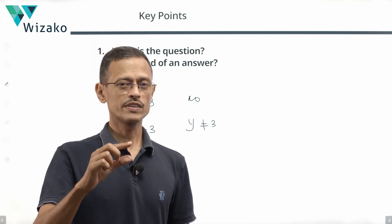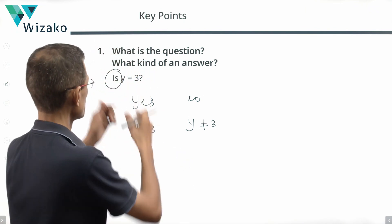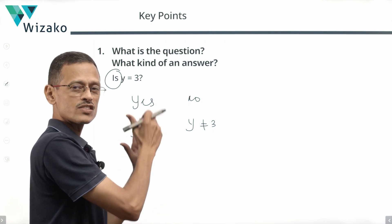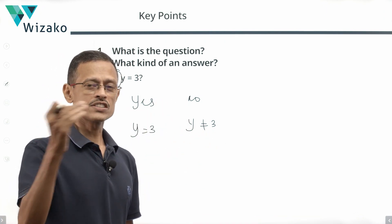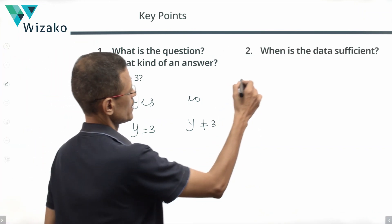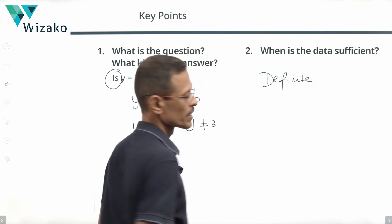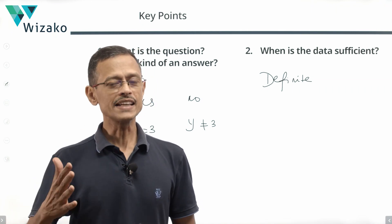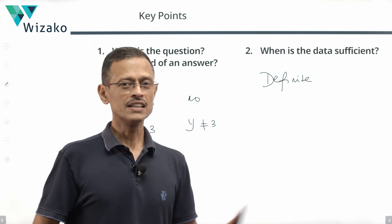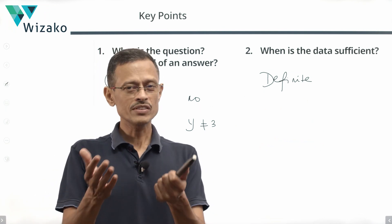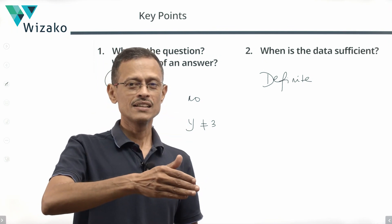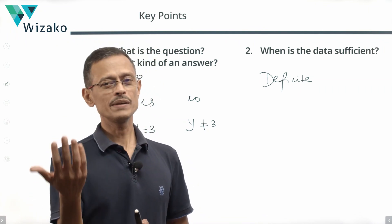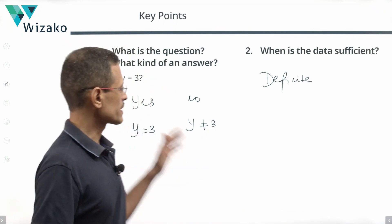Now, when is the data sufficient? The data is sufficient when you have a definite yes or a definite no. You should be able to say from the information in the statements, hey, y is 3 and nothing else — or y can be anything other than 3. If you can say one of these two with conviction, the data is sufficient. Conversely, if the information works when y equals 3 and also when y is not equal to 3, then you don't have a conclusive answer — that is when the data is not sufficient.